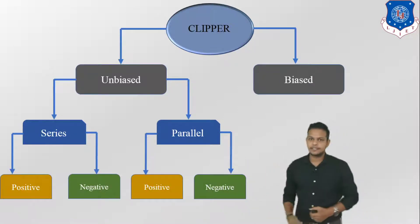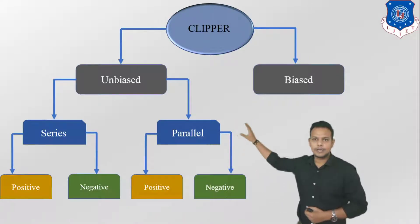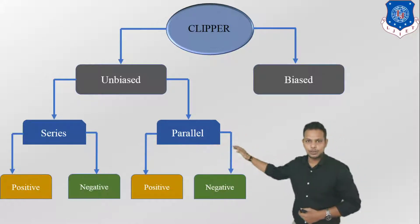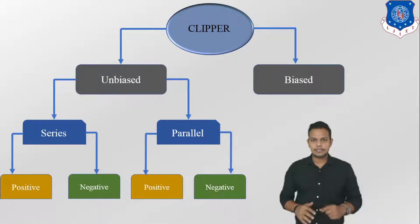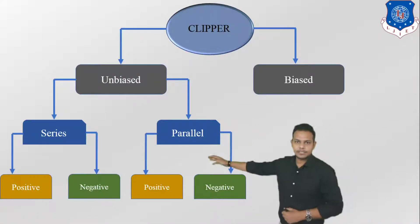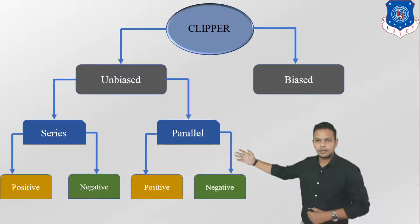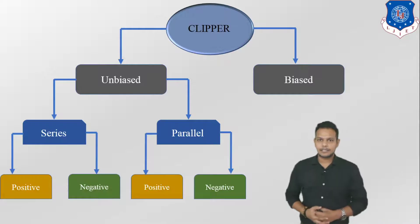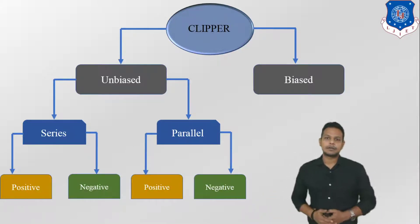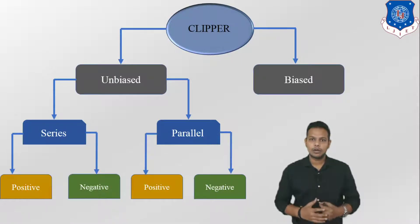Here we can see this is the chart of clipper. Clipper is divided into two parts: one is unbiased and another one is biased. Unbiased are divided into two types: one is series and parallel. In this video lecture today, we are going to discuss about only series unbiased clipper. Series is divided into two parts: one is positive and another one is negative. Parallel we are going to discuss in our next coming video lectures. So what is a clipper? Clipper is basically a wave shaping circuit which cuts off or clips off positive, negative, or both the halves together. This is known as a clipper.